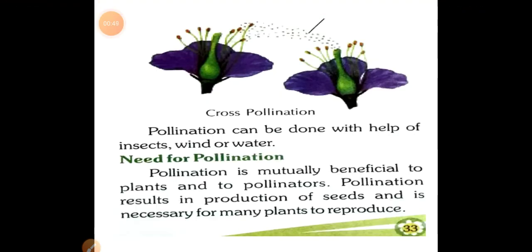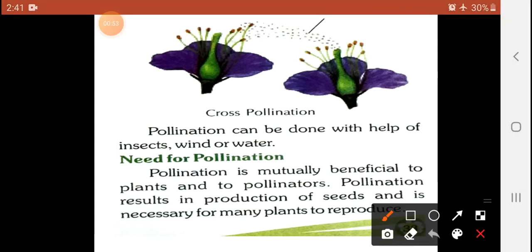First we will discuss pollination. According to the picture shown here, basically there are two types of pollination: one is self-pollination and the other is cross-pollination. Pollination can be done with the help of insects, wind, or water. Without pollinators, pollination will not be possible.